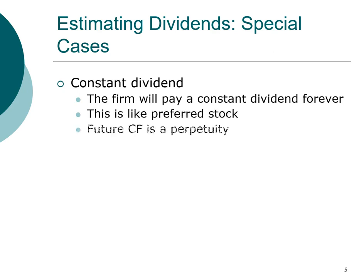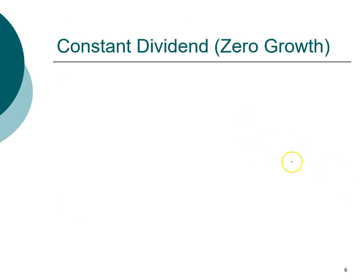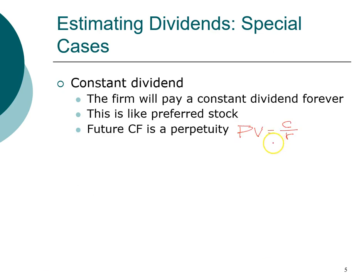If you don't remember the formula, it's a good idea to make a note of it. Here's a reminder: the present value of a perpetuity is the cash flow amount divided by the discount rate.